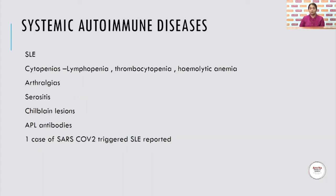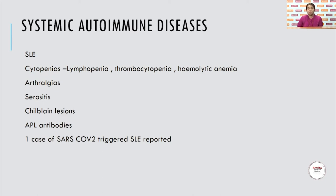The systemic autoimmune diseases which can be seen — SLE is many times seen as a consequence of or alongside COVID, because of the mechanisms already explained. Patients present with cytopenias such as lymphopenia, thrombocytopenia, or hemolytic anemia. They can present with arthralgias, serositis, chilblain lesions where gangrene of the fingertips may even be found, and positivity for antiphospholipid antibodies. Case reports exist of SARS-CoV-2-triggered SLE.